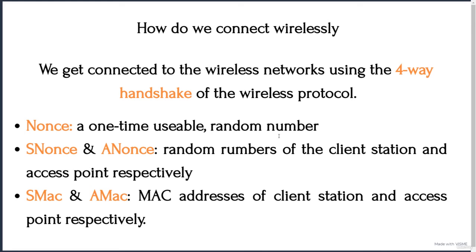We discussed in brief about what access points are and how we connect through them. We also discussed rogue access points and why we should stay away from them. Now let's get back to the main topic: how do we connect wirelessly? What is behind the scenes that allows my computer or your computer to connect to the internet through a wireless network? With wired connections it's easy — you just plug them in and it connects to the router, and the router to the internet. But what happens wirelessly using an access point? We are going to see that.